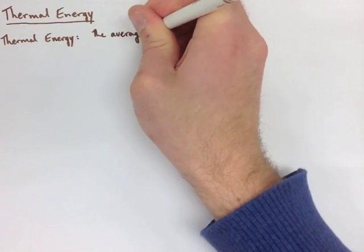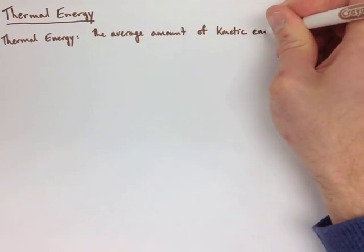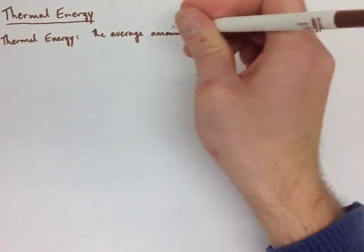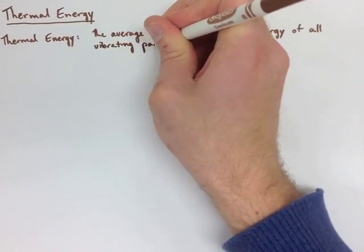The first one is Thermal Energy. Thermal Energy is the average amount of kinetic energy of all the vibrating particles in a substance.